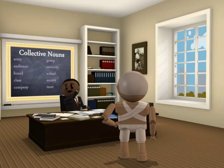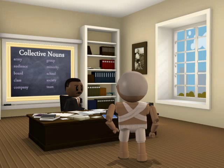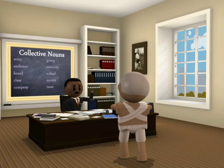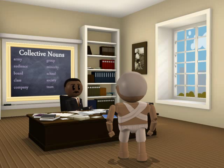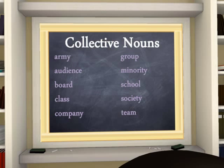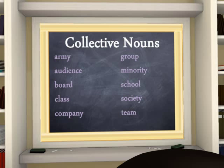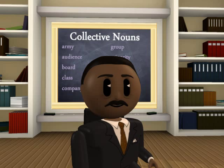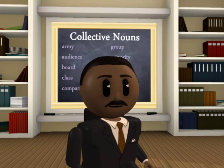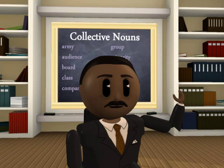Finally, we come to collective nouns. This is a special class that names groups composed of members, usually but not always people. Some examples of collective nouns are army, audience, class, family, group, jury, majority, public, school, society, and team. In the sentence "The minority protested in front of the White House," minority is a collective noun because it refers to a group of people.